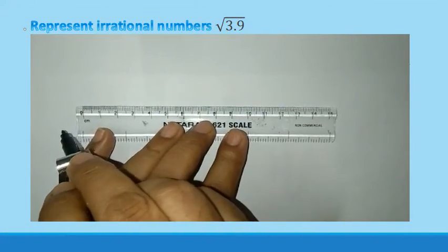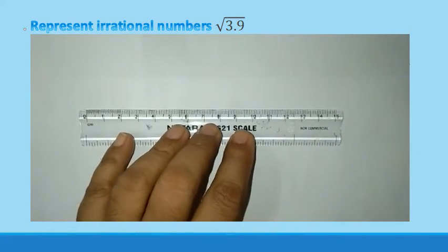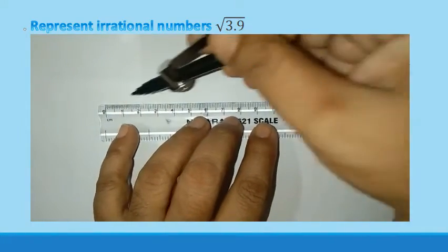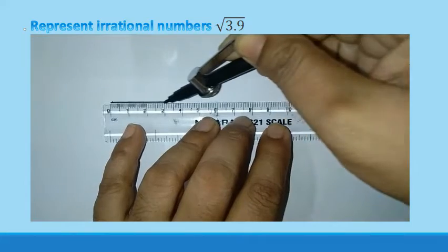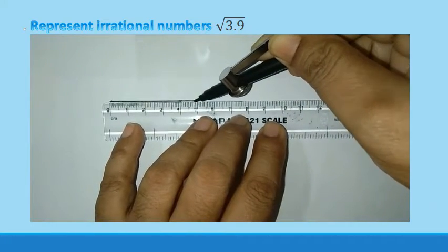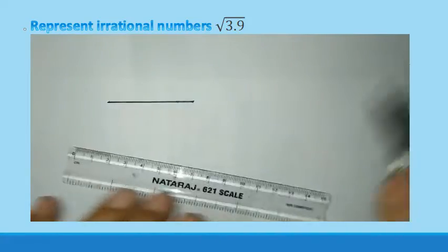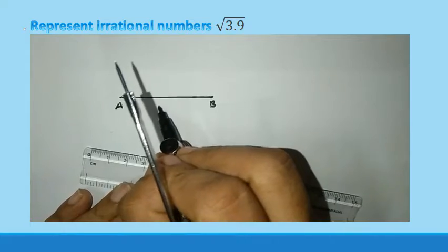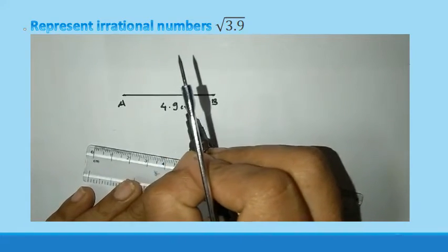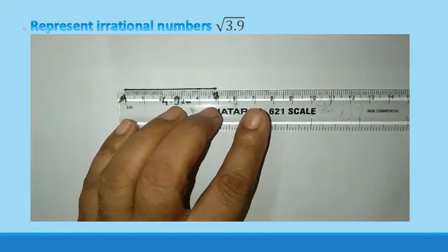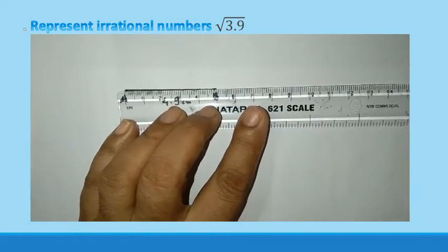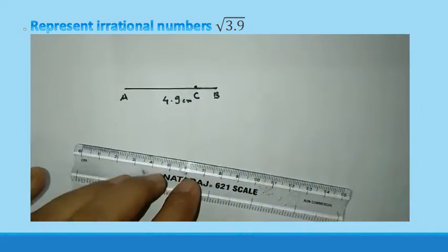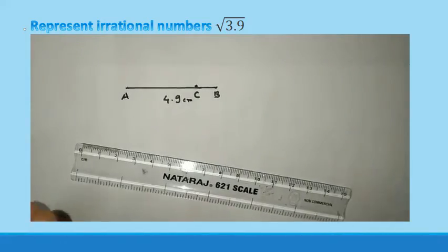Here the number is root 3.9 means we have to take 1 cm more means 4.9 cm distance. So see I am taking 4.9. We have to represent root 3.9 but I am taking 4.9 distance so it is 4.9. So if you want to locate your 3.9 you can locate this. So this C point is 3.9 cm distance. AC is 3.9 cm.